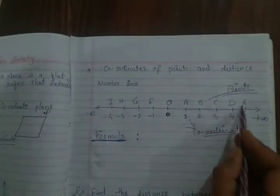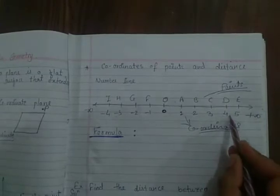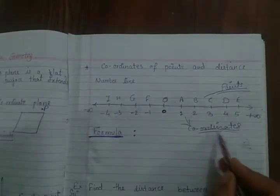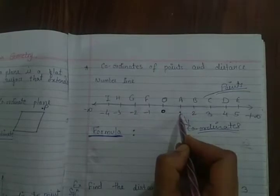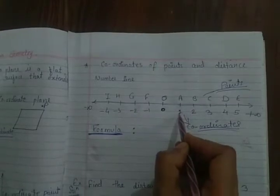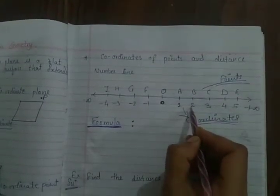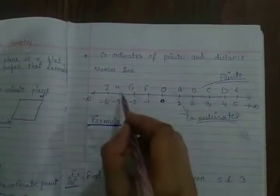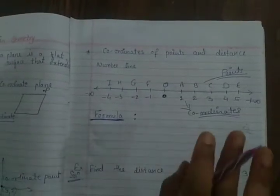Students, always remember: the alphabets are known as the points, and the numerical numbers are known as the coordinates of those points. So the coordinate of A is 1, coordinate of B is 2, coordinate of G is minus 2.